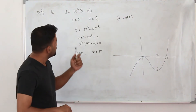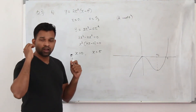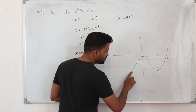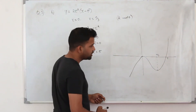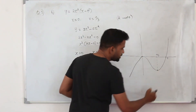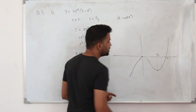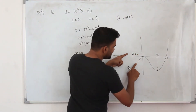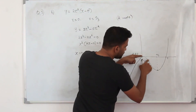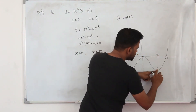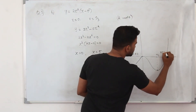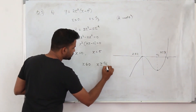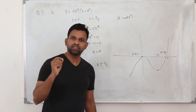For what values of x is the function increasing? Looking at the graph: the function is increasing until the turning point at 0, then decreasing until the stationary point at 10/3, then increasing again. So if x takes any value less than or equal to 0, the function is increasing; it decreases from 0 to 10/3; and for x greater than or equal to 10/3 it is increasing again.